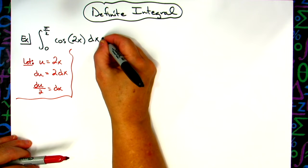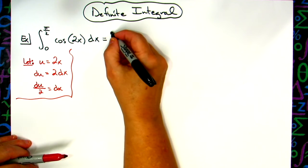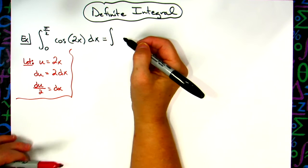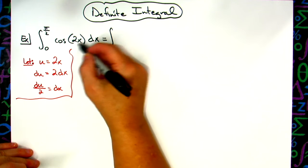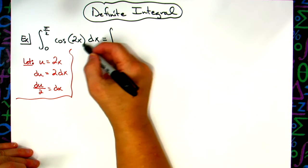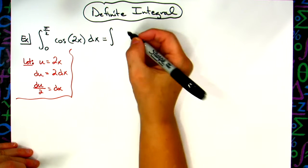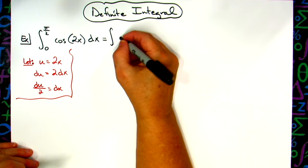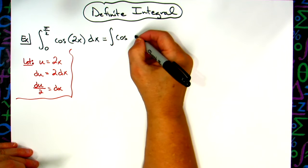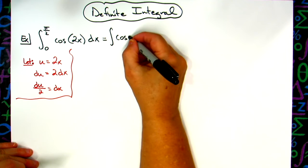Then we're going to come back up here to the original integral and do some substitutions. At this point, I'm going to remove those limits of integration because those limits of integration are for x when our equation is in terms of x.